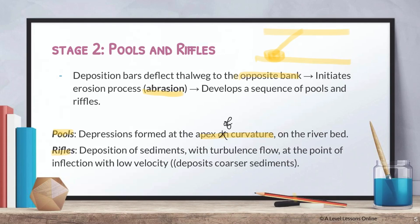I've gone through erosion processes — abrasion, hydraulic action, attrition — in a separate video. The abrasion causes depressions, like the ground sinking, and these are known as pools on the river bed. Riffles are the deposits of sediments at the point of inflection, where velocity is lowest. Only at the points of inflection will there be deposition of sediments. These deposited sediments are known as riffles.